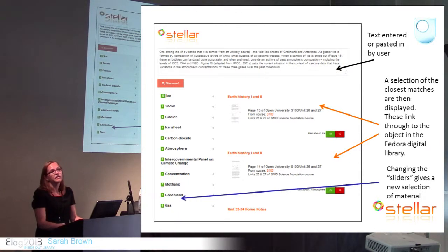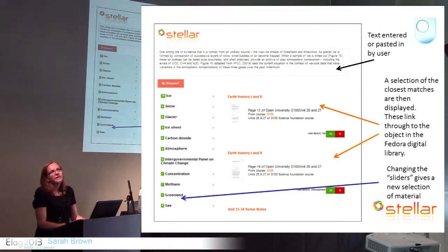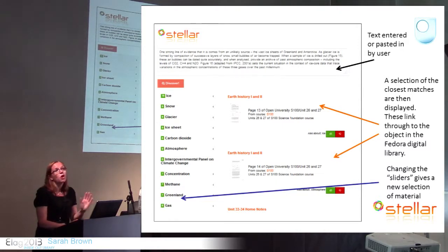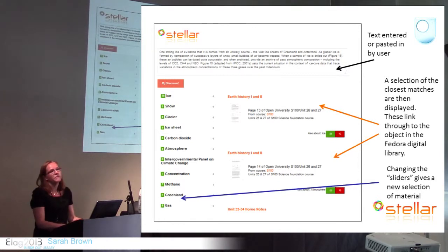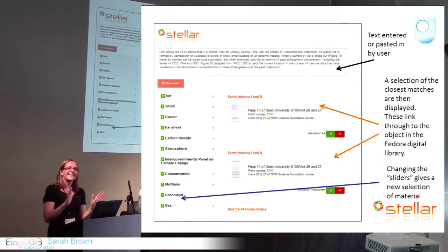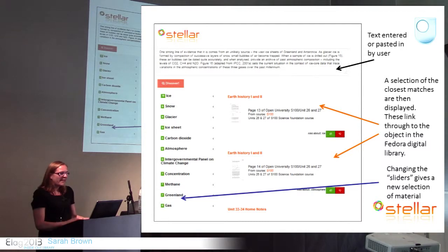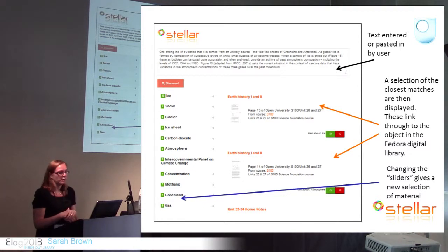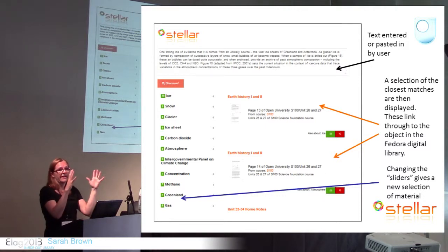We've been showing this to academics and other users across the university. In the top box, text is entered by the user — it could be pasted or typed in. So imagine an academic working on writing some course materials or an article: if they wanted to search for something to help them or refer to, they could just copy the text they're working on straight into the tool. The user then clicks the Discover button. The most feedback we've had is why can't we just press enter. Then, based on the meaning of the text entered, the tool suggests matches from the content we've been working on, and clicking on those takes you straight through to the actual content.